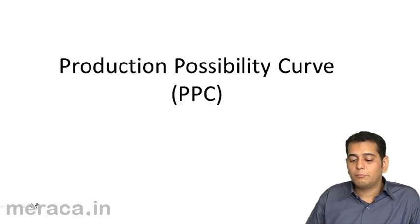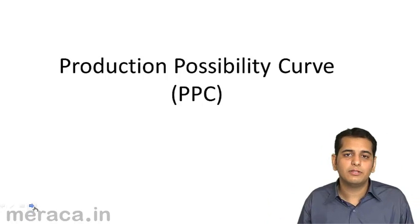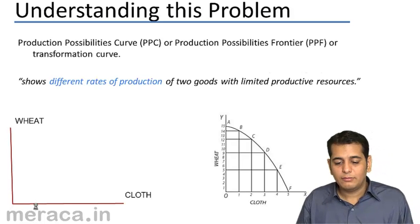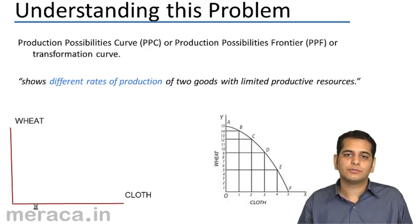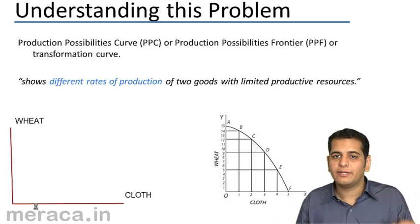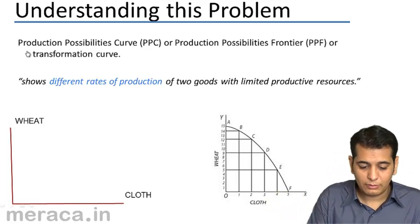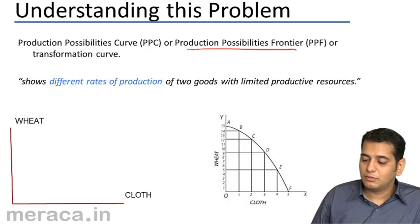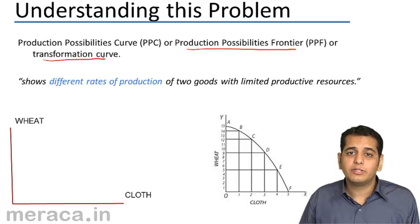Now let's take a look at the Production Possibility Curve. This is a new concept that we will be learning. The Production Possibility Curve answers the question of what to produce — it tells you which product you should produce more, or the combination that will give you the highest productivity and yield. It is also called the Production Possibility Frontier or the Transformation Curve.